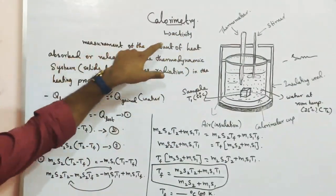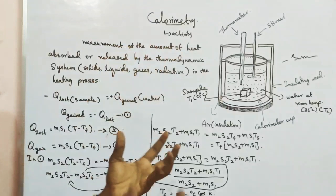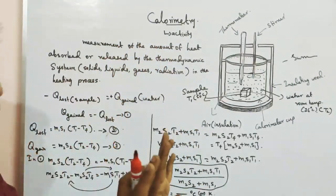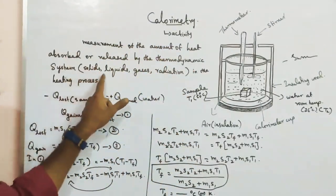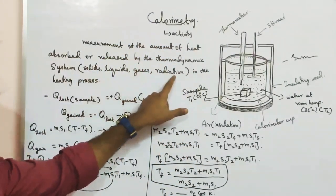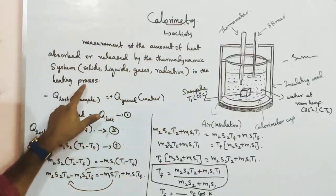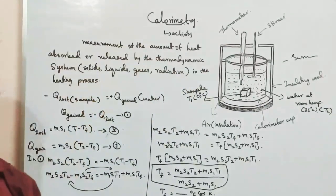To summarize: calorimetry is the measurement of the amount of heat absorbed or released by the thermodynamic system. These are examples of the thermodynamic system in the heating process. Thank you.